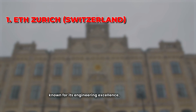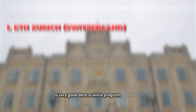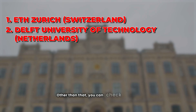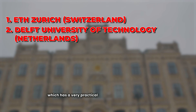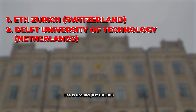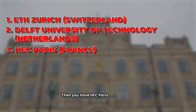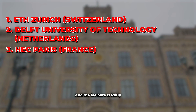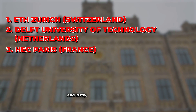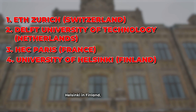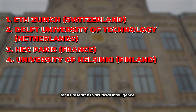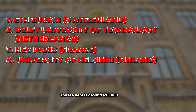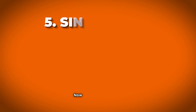Good EU universities to consider: ETH Zurich in Switzerland is known for engineering excellence and has a strong data science program, though the fee is around 40,000 Swiss francs per year, making it one of the more expensive European options. TU Delft takes a practical approach with a fee of just €10,000 per year. HEC Paris has a good business-focused data science program at around €26,000 per year. Finally, University of Helsinki in Finland is known for its AI research and offers a competitive data science program at around €15,000 per year.